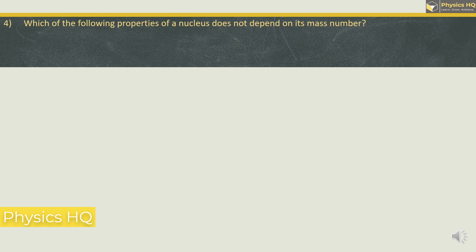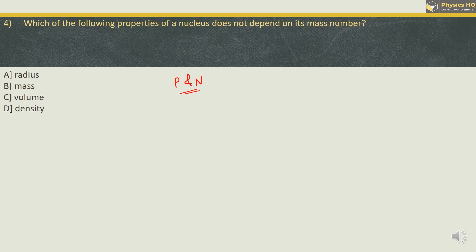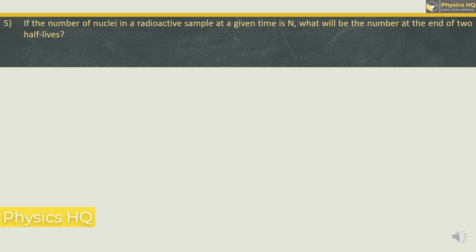Which of the following properties of a nucleus does not depend upon its mass number? Options: radius, mass, volume, or density. Mass number is simply the count of protons and neutrons in the nucleus. If the mass number changes, the radius, mass, and volume will all vary. The only quantity that will not vary with mass number is the density. So the correct option is option D.